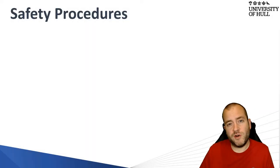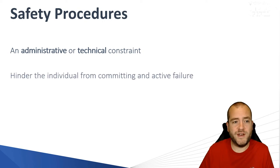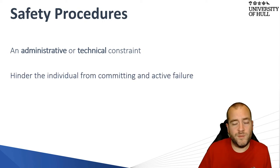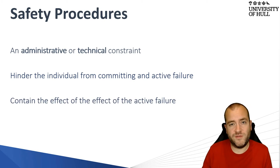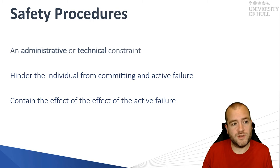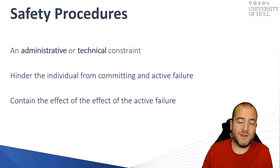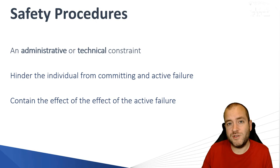In the design of systems, we try to avoid errors as much as possible by placing systems to stop them happening. These can be classified as administrative or technical, and the idea is that they place constraints and hinder an individual from committing an active failure, but also contain the effects of one. For example, when we discharge a patient from hospital, we have to send their medication list to the pharmacy before discharge — an administrative constraint of completing the drug card and a technical constraint of having a second person check the medication.